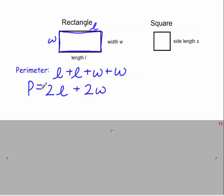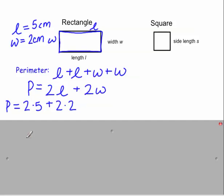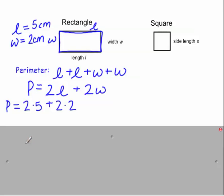So say for example that we were given that the length is 5 centimeters and the width was 2 centimeters. Then we could solve for the perimeter saying 2 times 5 plus 2 times 2. Order of operations, 2 times 5 is 10 plus 2 times 2, which is 4, would give you a perimeter of 14 centimeters.